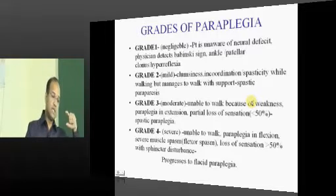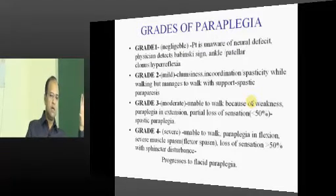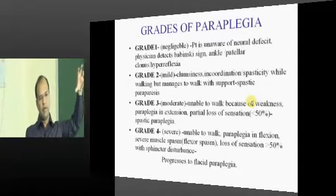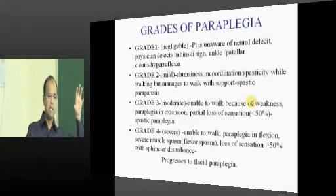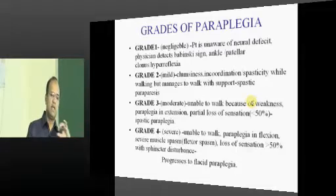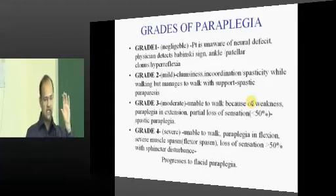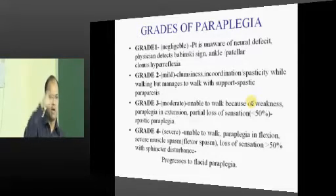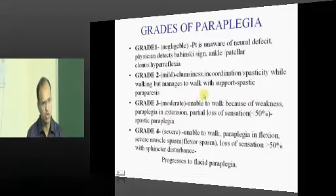As described for tuberculosis of the vertebral bodies, initially there is the pre-destructive stage where there is only spasm. In the early destructive phase there is disc collapse or haziness of the disc. In the late destructive phase you have all the symptoms of destruction of the disc, collapse of the vertebra, and various angular deformities including kyphosis.